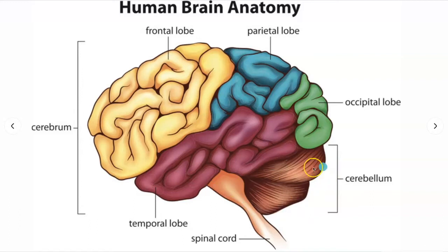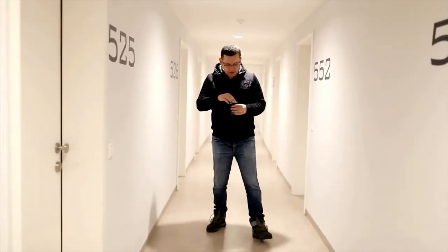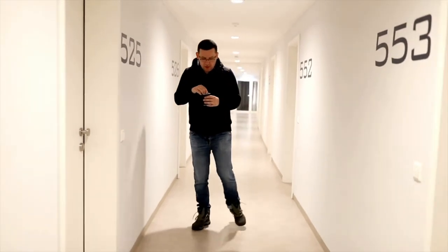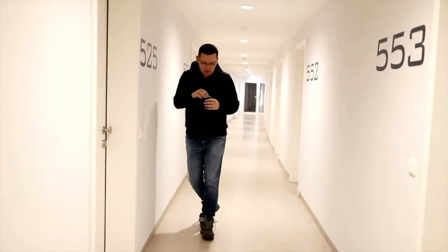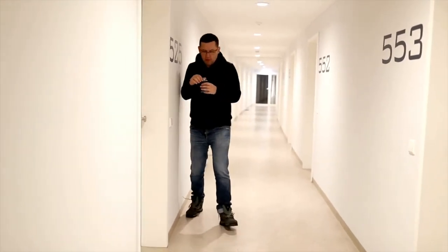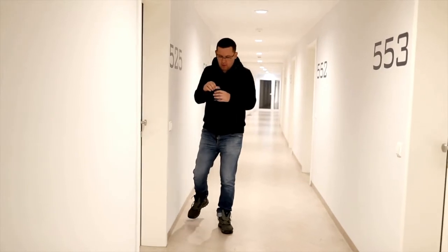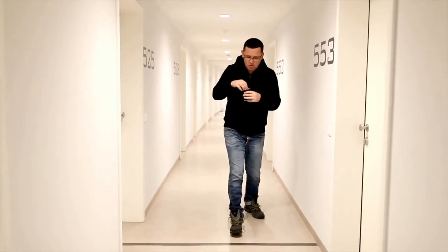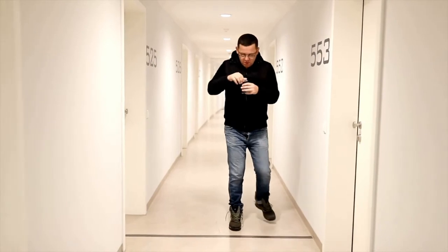Let's start with the cerebellum. The cerebellum is located under the cerebrum, and its function is to coordinate muscle movements, maintain posture and balance. So if someone has trauma to this area, their balance and coordination would be off. That's why sometimes in a concussion, people walk a little different, almost like they're drunk, because their cerebellum is affected.